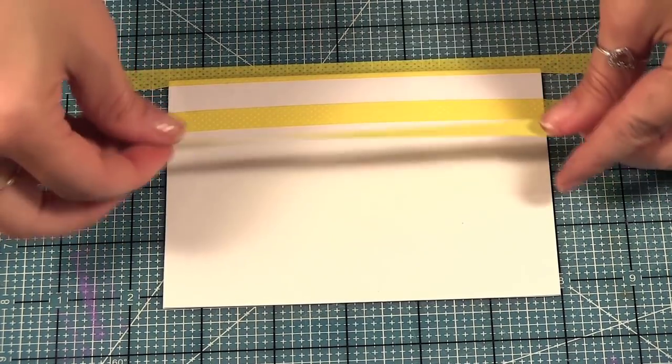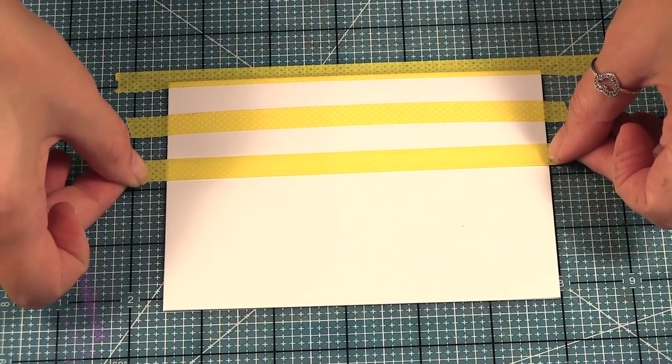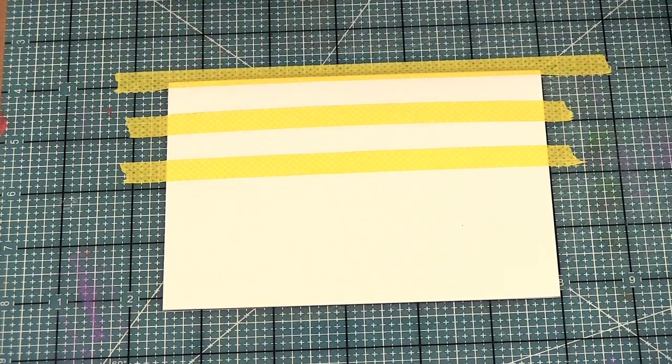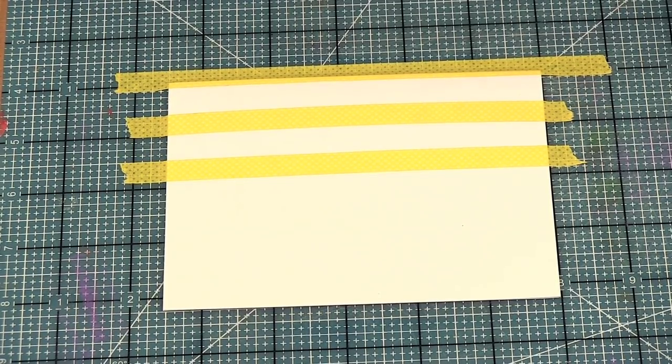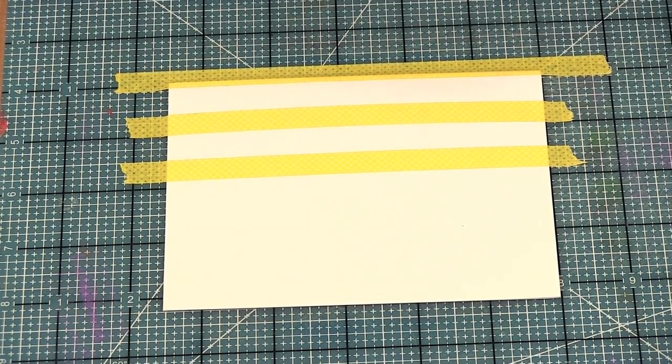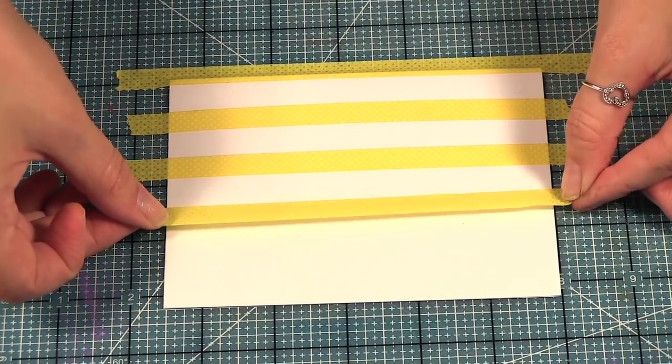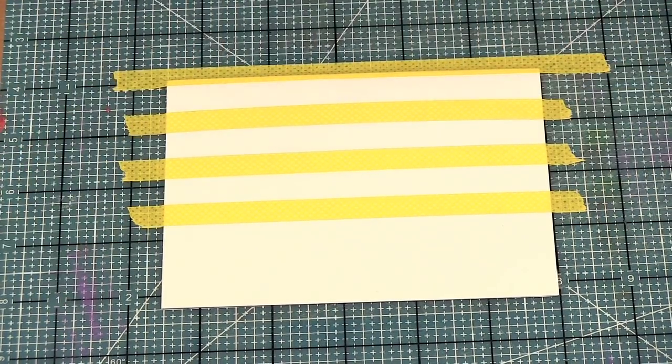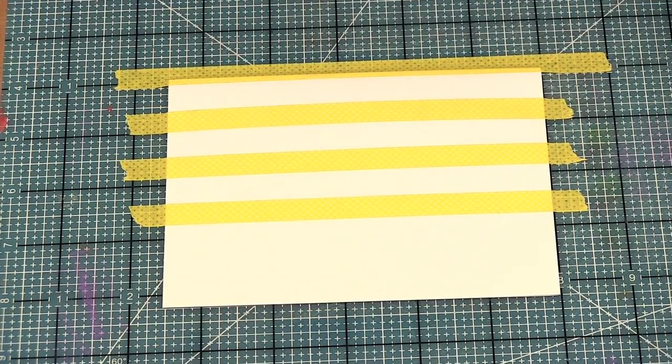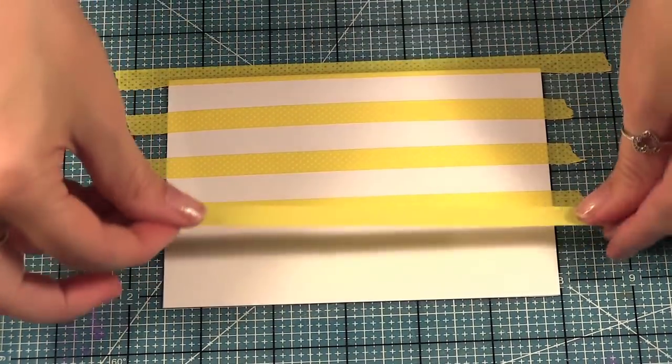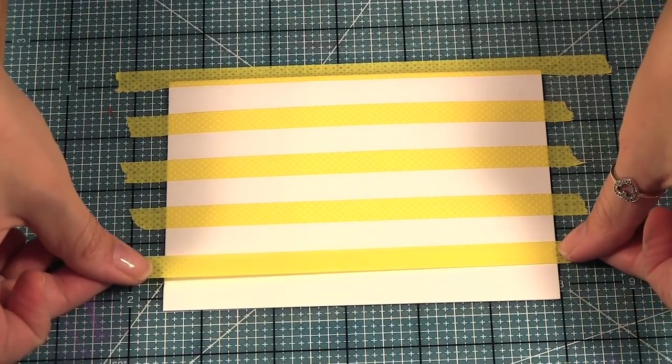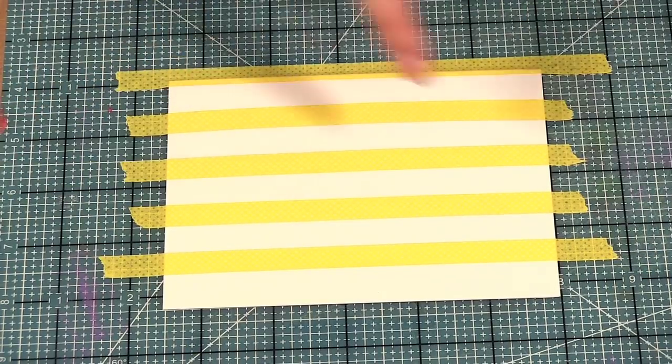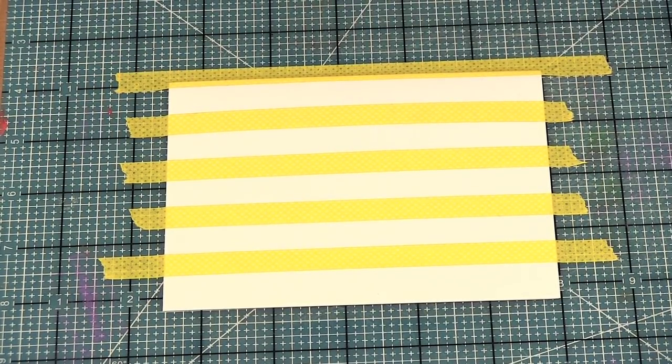So I need another half inch, which is here. And this is why I use the cutting mat, so I can see my lines. I don't have to get out a ruler and deal with all that. Another half, and then just at the bottom there will be a little bit.